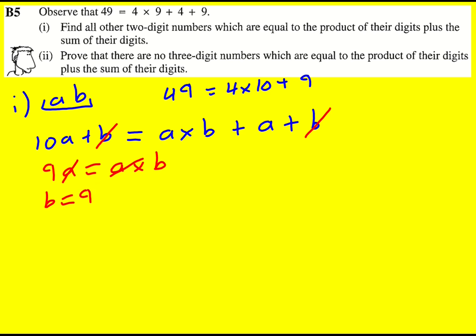However, there's no restriction on A. So A, as long as it's a digit non-zero, we're okay. And therefore we could have 19, 29, 39 and so on. Now it does say find all others, so I can ignore 49. Already got that one.